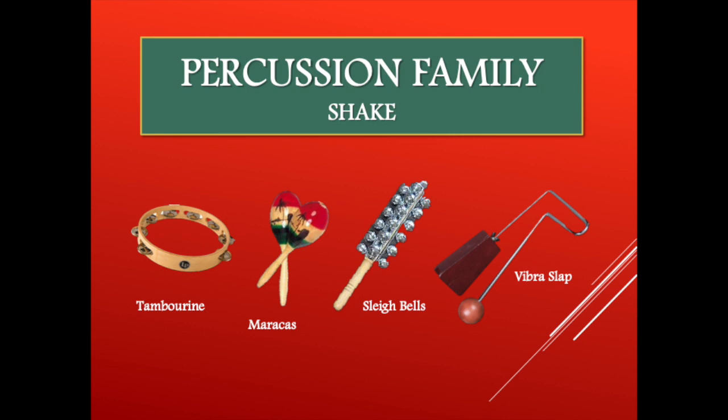Here are some members of the shake category. The beads, rice, or metal plates will strike together or against the instrument when shaken to make a sound. The most common members of this group include the tambourine, the maracas, the sleigh bells, and the vibra-slap.